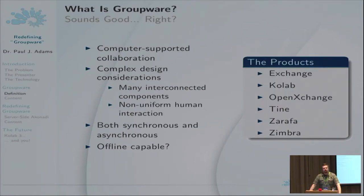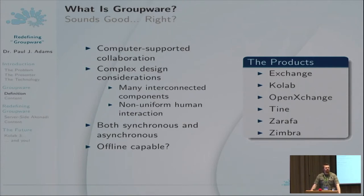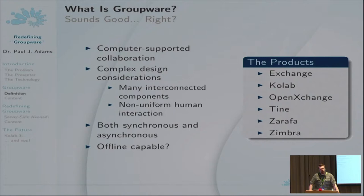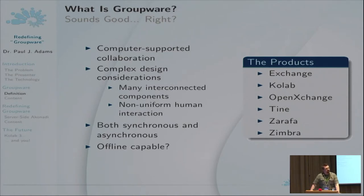Let's get into the nuts and bolts of what groupware actually means. Computer-supported collaboration — there's a specific term, computer-supported cooperative work, but I tend to avoid that because cooperative work normally suggests real-time collaboration, which is only really something that's up and coming in the groupware world. Groupware has very complex design considerations because it's not just the case of having email, a calendar, a to-do list, and contacts sitting separately. These things actually have to work together.